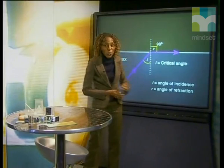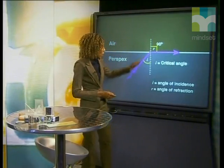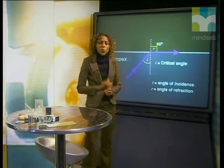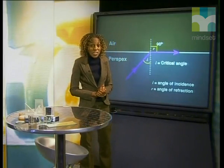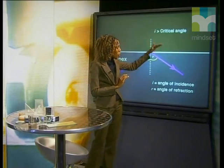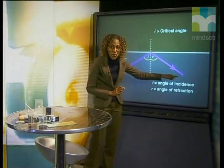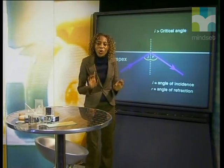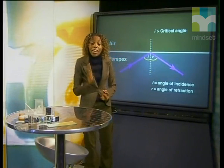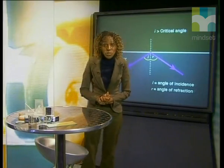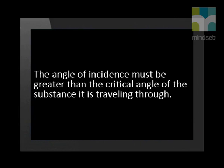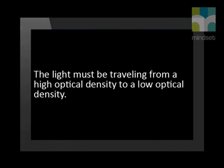The angle of refraction is now 90 degrees. Once we have an angle of incidence greater than the critical angle, the light is refracted so much that it cannot leave the medium — this results in the light being reflected, which is called total internal reflection. There are two important conditions: firstly, the angle of incidence must be greater than the critical angle of the substance; and secondly, the light must be traveling from a high optical density to a low optical density.